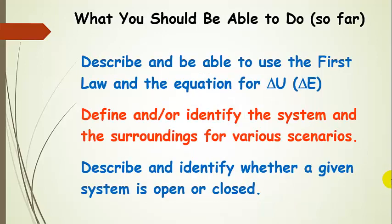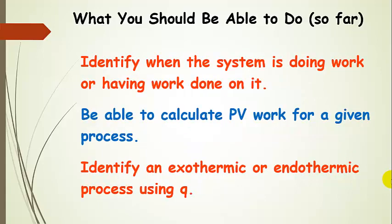So what should you be able to do so far? You want to be able to use the first law and the equation for internal energy, delta U. You want to be able to define and identify the system and the surroundings for various scenarios, and describe whether a system is open or closed. Very importantly, you want to be able to tell — by words in the problem or the sign of W — whether the system is doing work or having work done on it. You want to be able to calculate PV work for a given process, and identify an exothermic or endothermic process using the sign of Q.